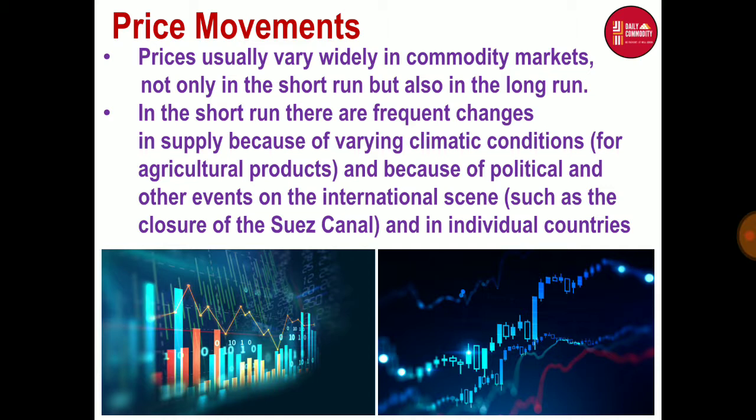Market conditions can differ from product to product — each product will have different market conditions. For example, with sugar and wheat, the demand is relatively stable because these are commodities mainly used for everyday consumption, but their supply can vary significantly.